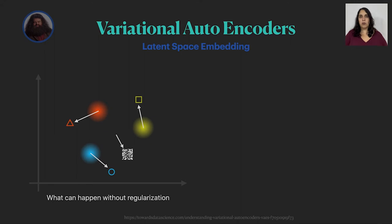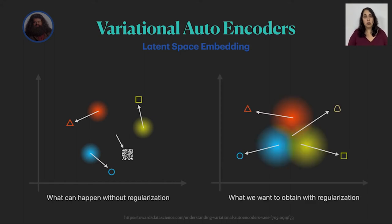What happens when we regularize the space is that we basically push all of these distributions to be together around the normal distribution. So now our latent space is much more complete. And if we randomly sample from the normal distribution, we are much more likely to generate a valid image.